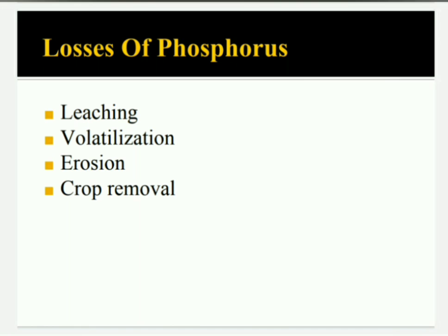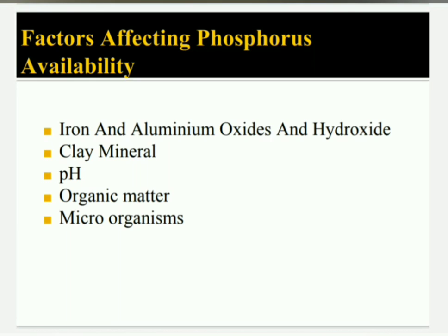Loss of phosphorus in the form of erosion is mainly from the surface layer. Another loss is crop removal, where phosphorus is taken up by the plants.